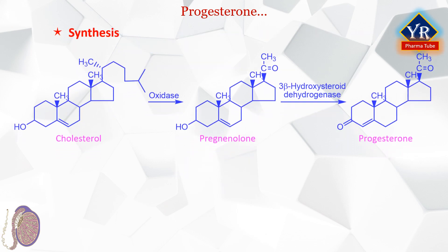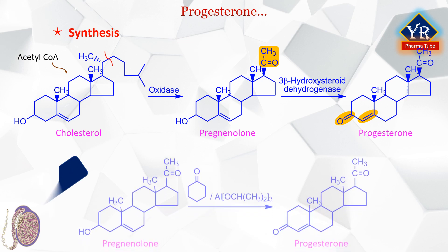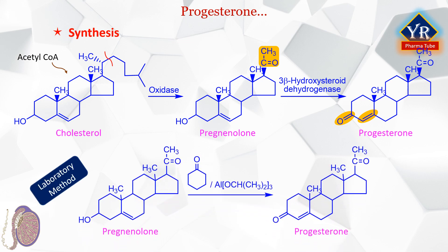Synthesis of progesterone: Progesterone is biosynthesized from cholesterol, which in turn is made in vivo from acetyl coenzyme A and also comes from exogenous sources. The oxidative cleavage of the side chain of cholesterol is catalyzed by cytochrome P450-containing oxidase. Pregnenolone so formed, by the reaction catalyzed by 3-beta-hydroxysteroid dehydrogenase, gives progesterone. Biosynthesis of progesterone occurs in the ovary, testis, adrenal cortex, and placenta. Progesterone is also made in a laboratory by oxidizing pregnenolone with aluminum isopropylate in the presence of cyclohexanone as a proton acceptor. This reaction is known as Oppenauer oxidation.